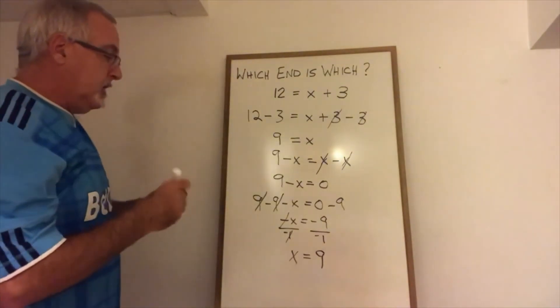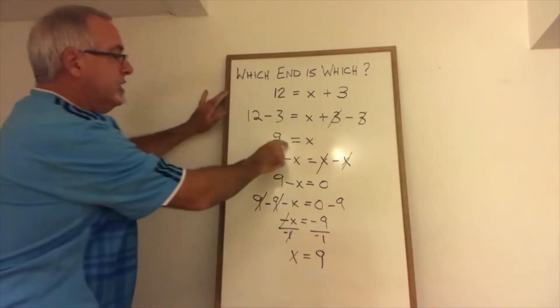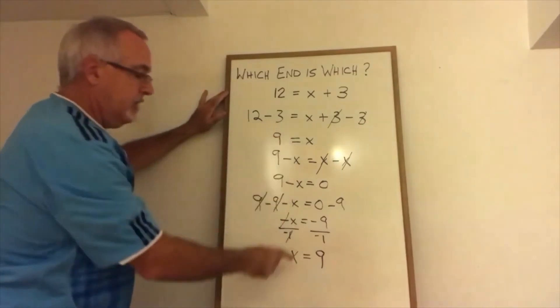And of course, there's a shortcut for this, which is you can just turn any equation backwards if you want. I can see nine equals X and I can say, oh, that means I can write X equals nine.